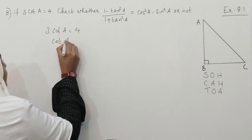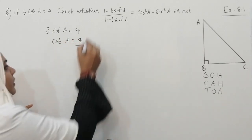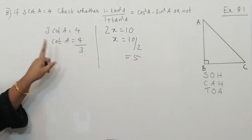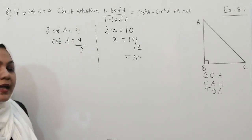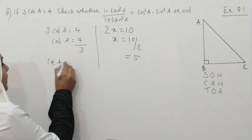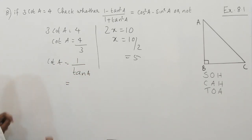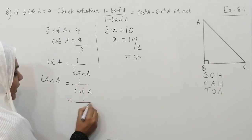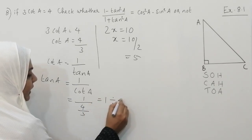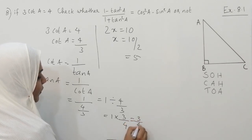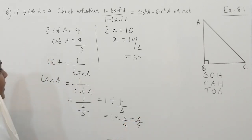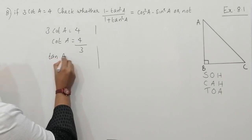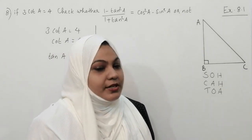That means cotA is equal to 4 by 3. Just like if 3x equals 10 then x equals 10 by 3, similarly 3cotA equals 4 means cotA equals 4 by 3. You know that cot and tan are reciprocals of each other, so tanA is the reciprocal of cotA. That gives us tanA equals 3 by 4.